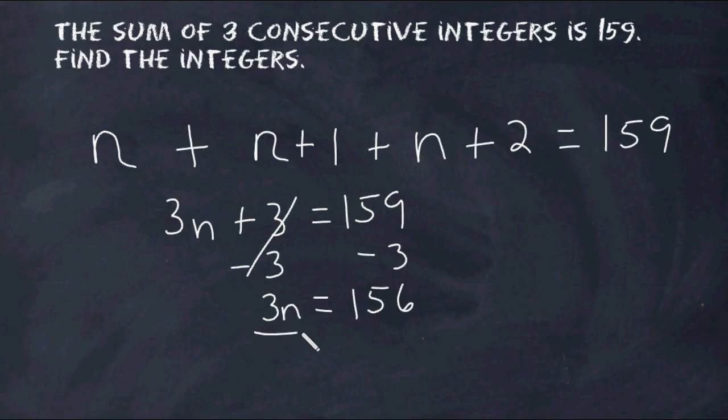And now we have to divide this side by 3, and we have to divide this side by 3. 3 divided by 3 is 1, leaving us with 1n. And 156 divided by 3 is 52.